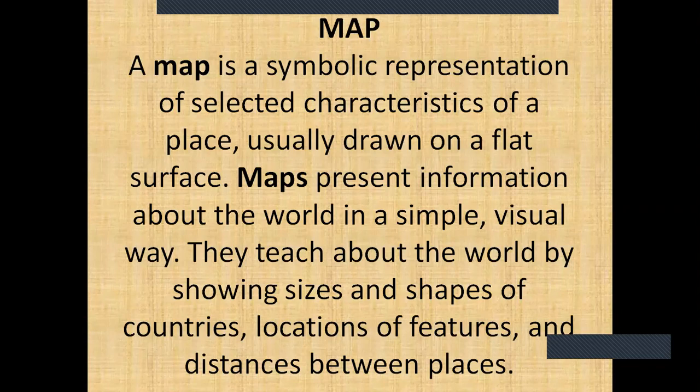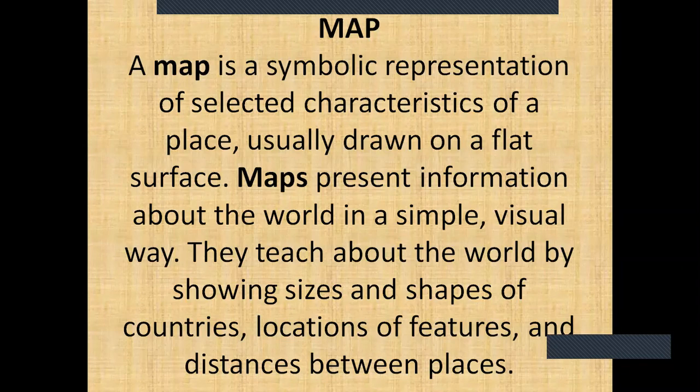We will discuss the map and the exercises of the chapter Major Rivers of India. A map is a symbolic representation of selective characteristics of a place, usually drawn on a flat surface. Maps present information about the world in a simple and visual way, showing sizes and shapes of countries, locations and features, and distances between places.